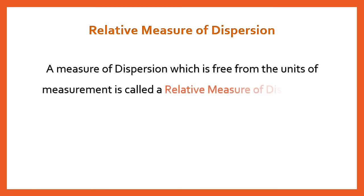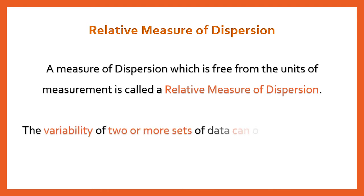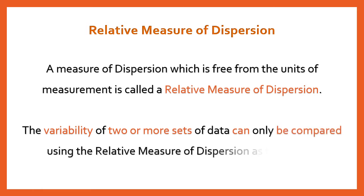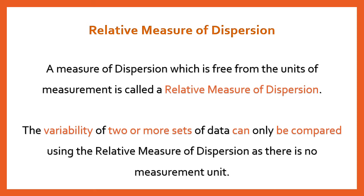The relative measure of dispersion is free from the units of measurement. It is just a number without any unit, so data measured in kilograms, liters, or meters can all be compared with each other because their units are ignored. The variability of two or more sets of data can only be compared using this measure.